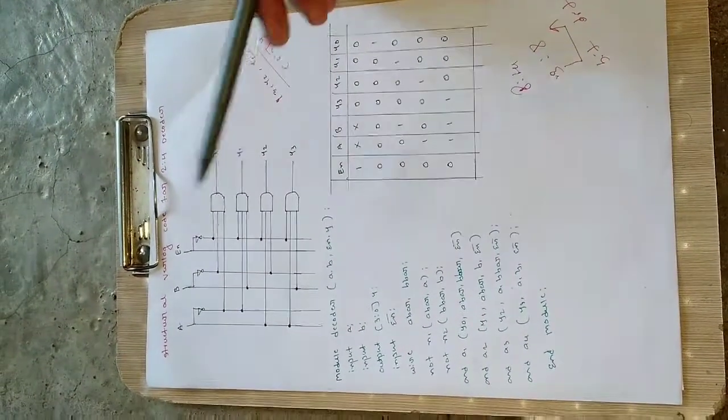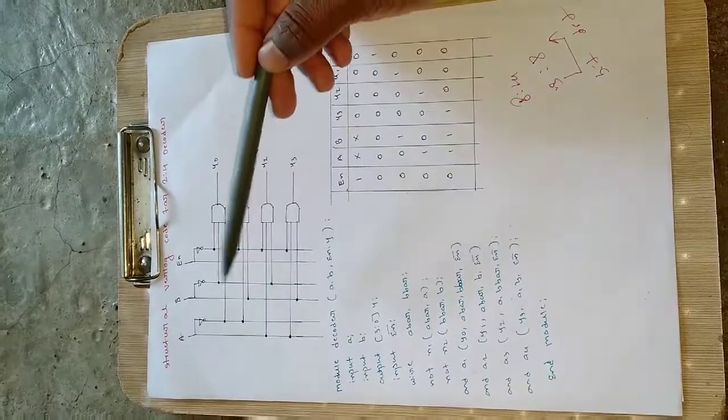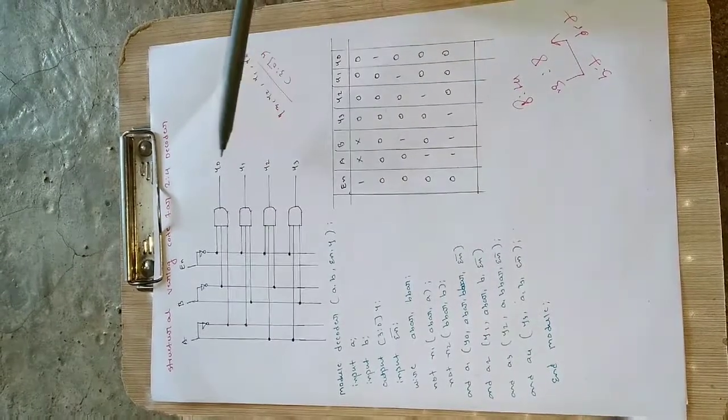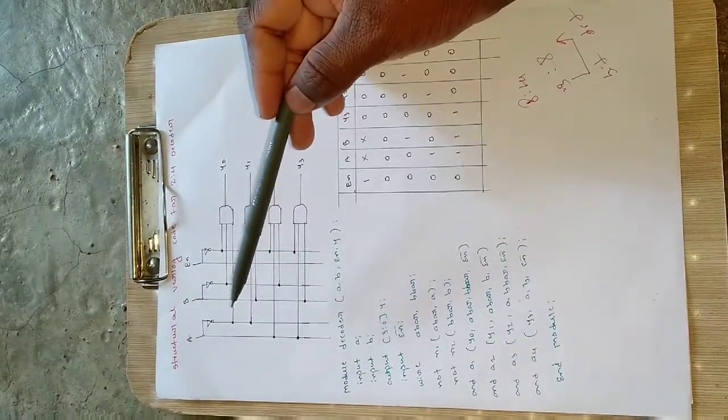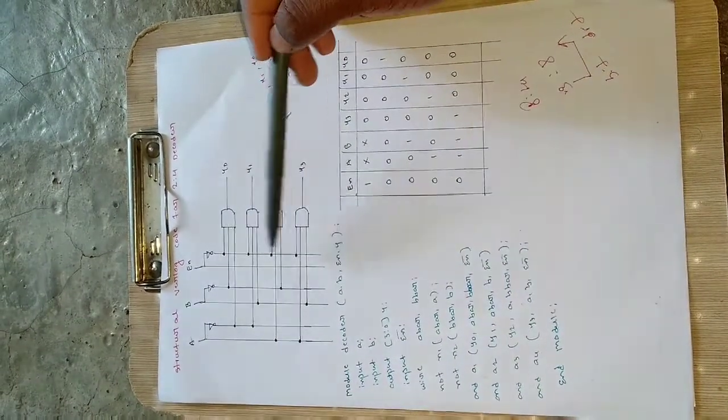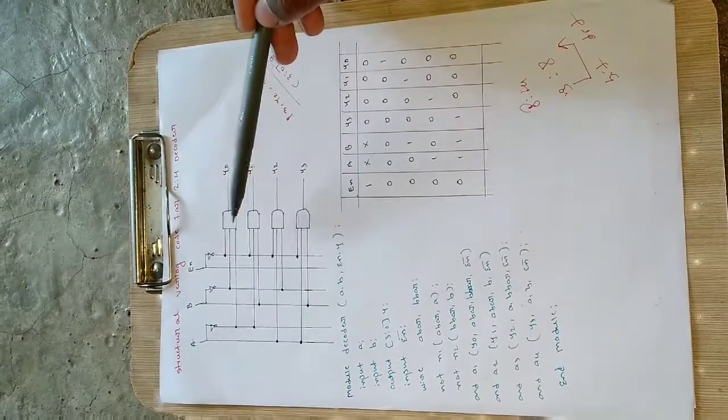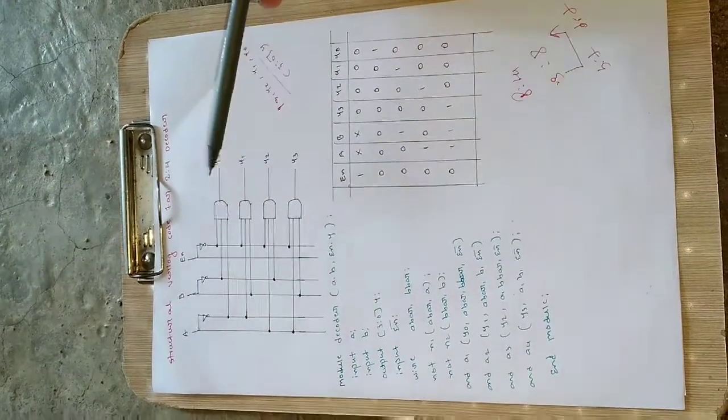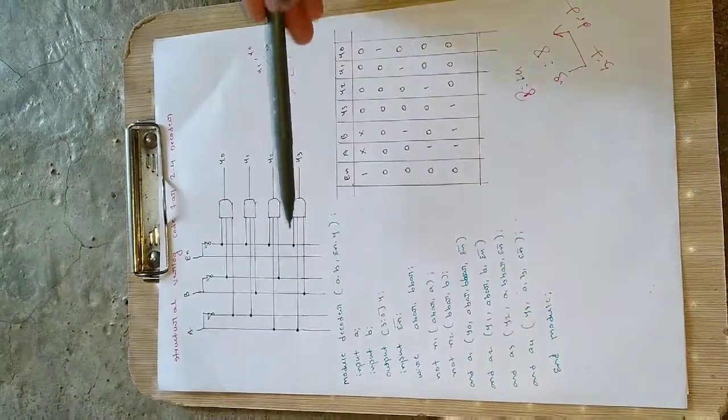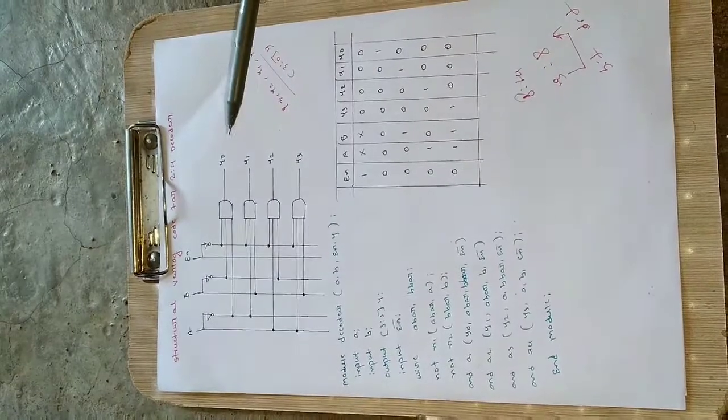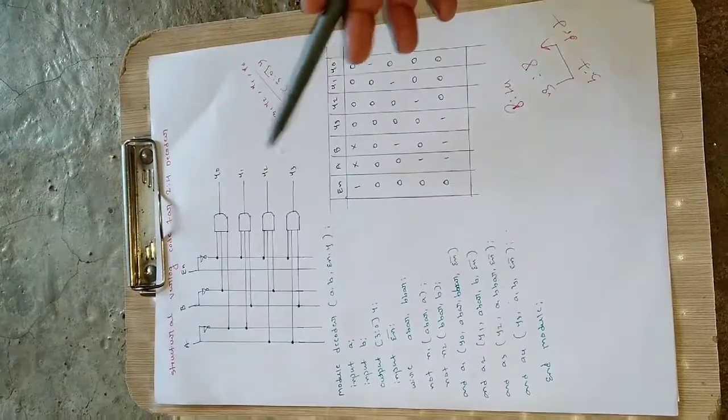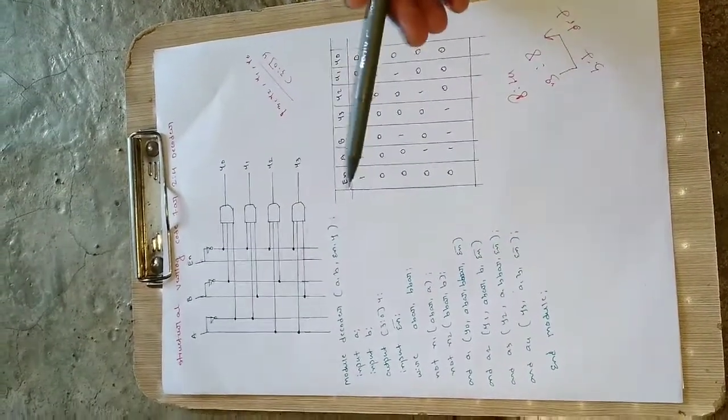When you convert it in terms of boolean expressions and draw the circuit, there will be A, B, and enable pins with their negations, and four AND gates for the four outputs Y0, Y1, Y2, and Y3. For the first one, A bar, B bar, and enable bar are connected. Enable bar is common for all circuits to ensure operational state. For the second, A bar and B are connected; for the third, A and B bar; and for the fourth, A and B are connected.